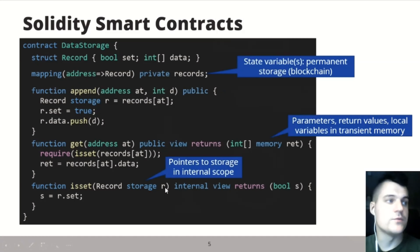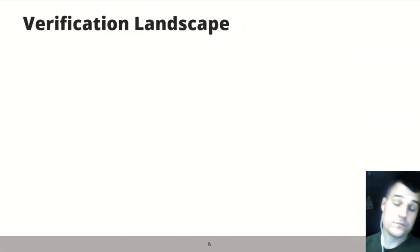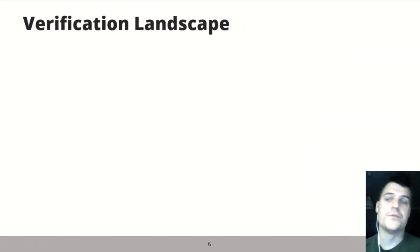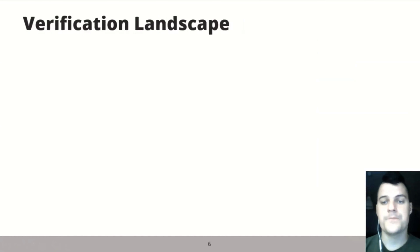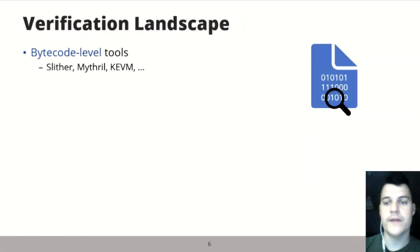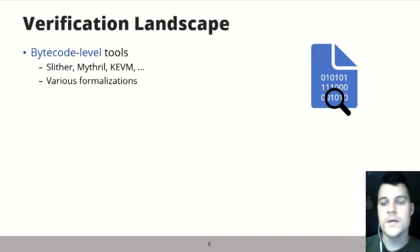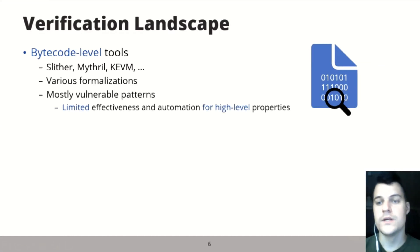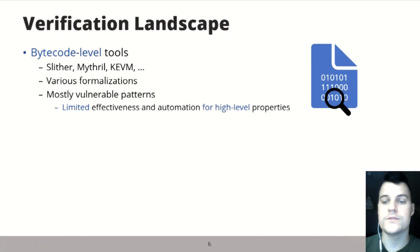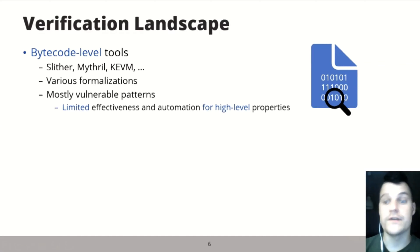Interestingly, in an internal scope it is also possible to define pointers to permanent storage, as seen in the parameter of the internal is_set function. This R can point to one of the entries in the records mapping. Formal verification has gained great interest in this field, mainly due to the financial consequences associated with bugs.